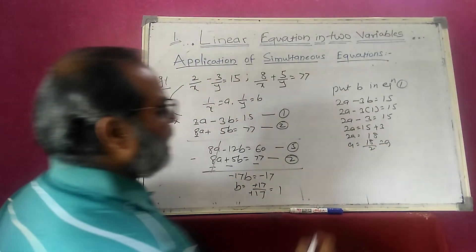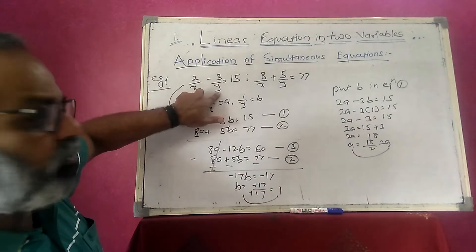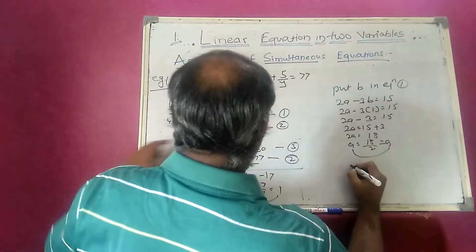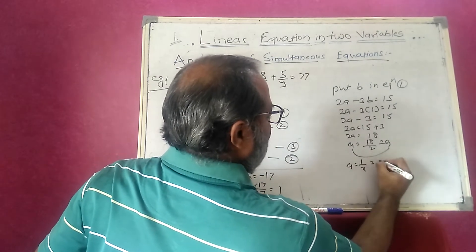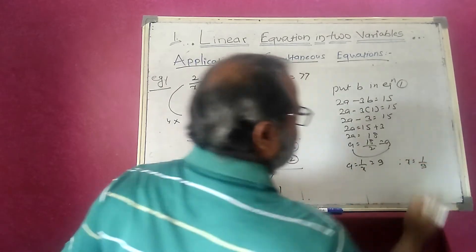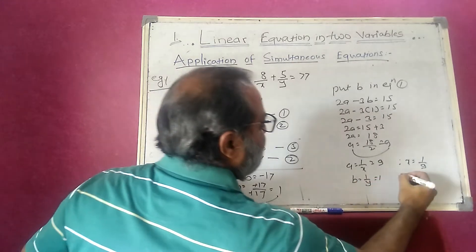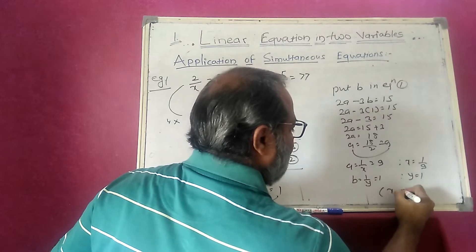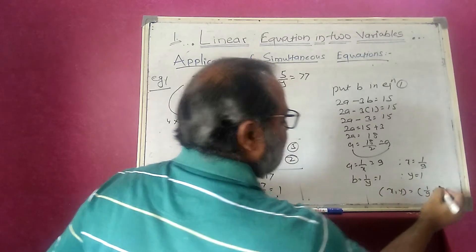We get a equals 9 and b equals 1. But our original equation is in terms of x and y, so we resubstitute. Since a equals 1/x equals 9, x becomes 1/9. And since b equals 1/y equals 1, y becomes 1. So our solution is x equals 1/9 and y equals 1.